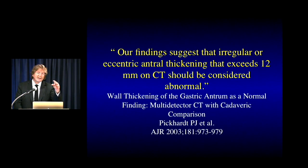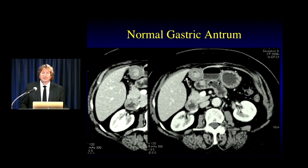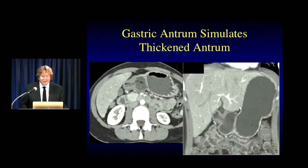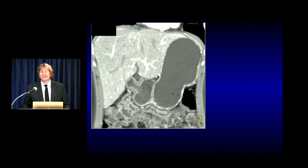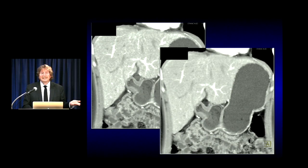The other tricky area is the antrum, because the stomach looks a bit thicker there. An article by Pinkard made the point that 12 millimeters is upper normal. The way to be certain the antrum is normal is that it's symmetric. When you have antral infiltration by tumor — whether inflammatory disease or neoplasm — there's asymmetry. When it looks symmetric, although it appears thickened, it's not pathology. A well-placed cut plane through the antrum can show that symmetry clearly; this is not pathology, the patient does not need to be endoscoped.